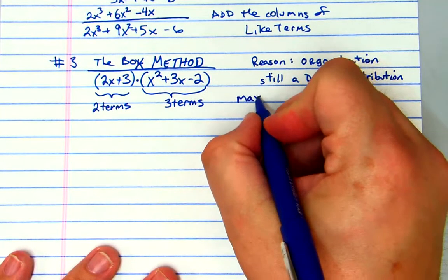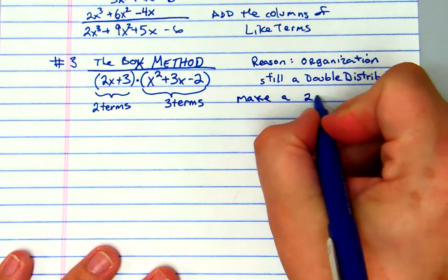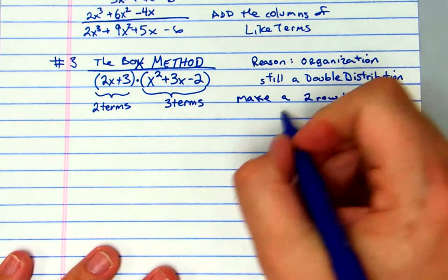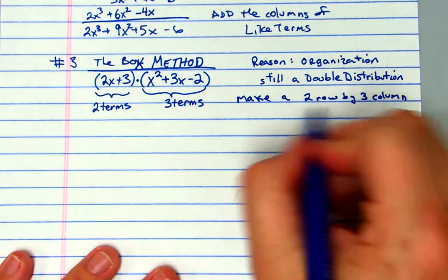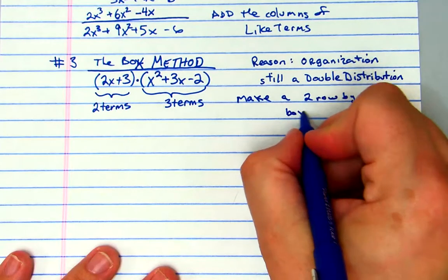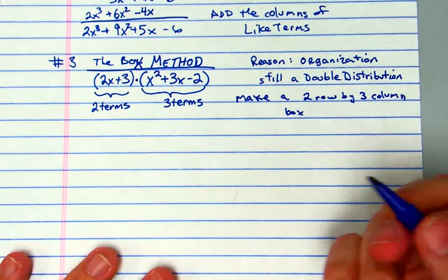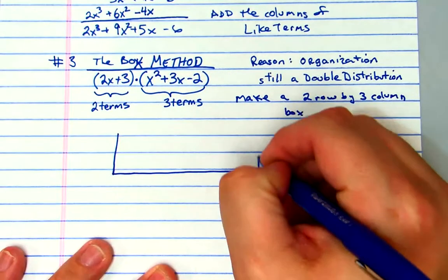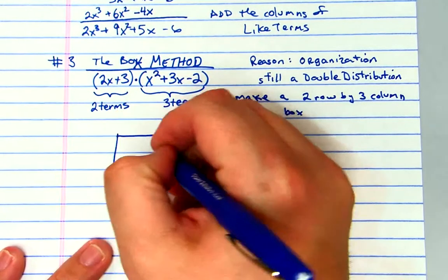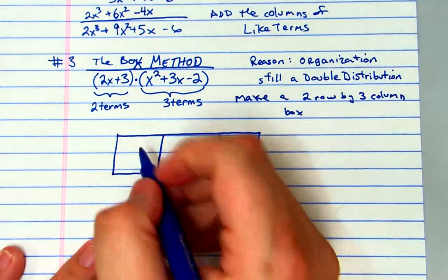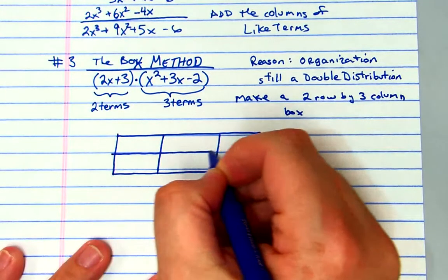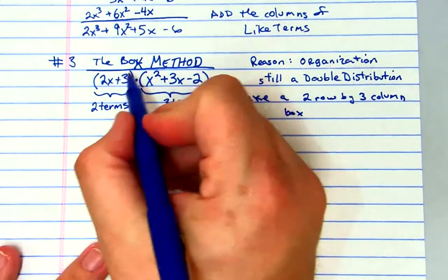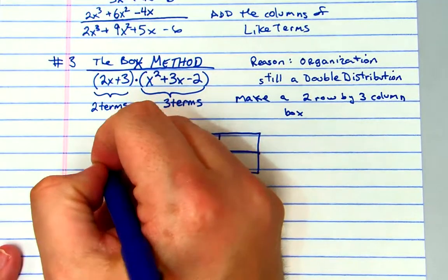What you want to make - you're going to make a two row by three column box, a rectangle. So what I'm going to do is I'm going to create the rectangle. There are my three columns and there are my two rows.